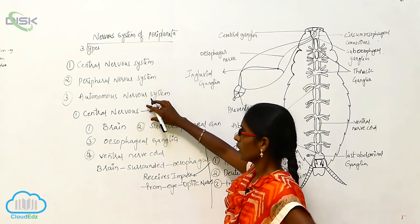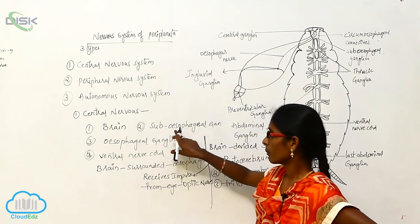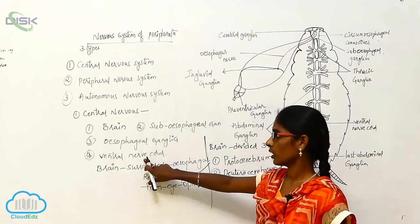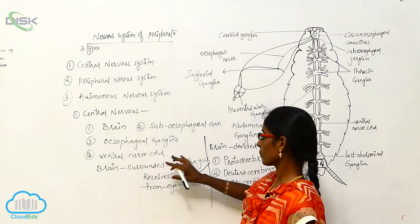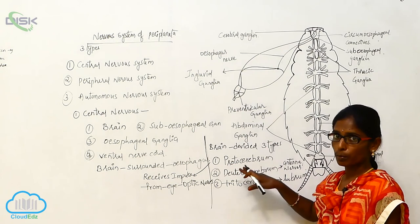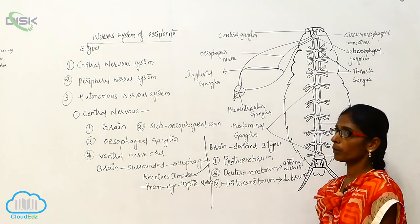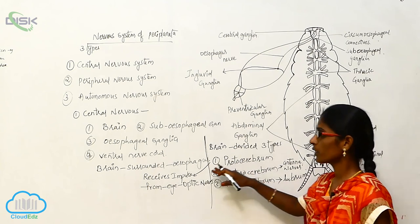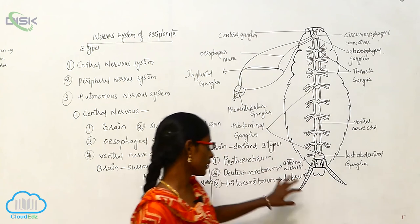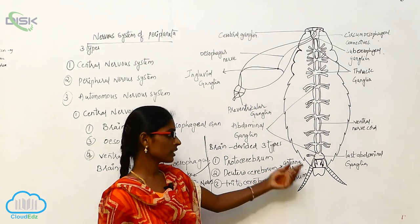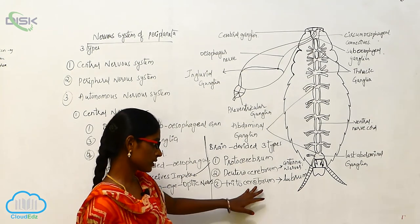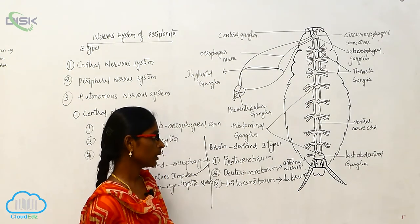The central nervous system consists of the brain, subesophagal ganglia, esophagal ganglia, and ventral nerve cord. The brain is surrounded by the esophagus and divides into protocerebrum, deuterocerebrum, and tritocerebrum. The protocerebrum receives impulses from the eye via optic nerves, deuterocerebrum from antennal nerves, and tritocerebrum from the labrum.